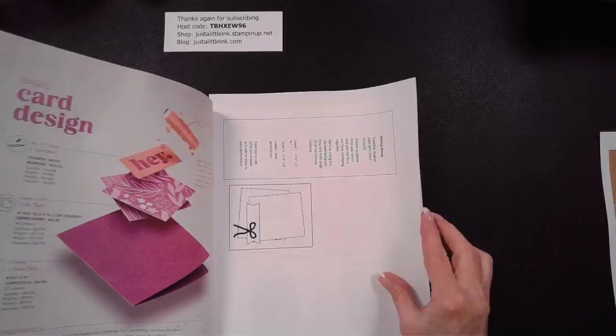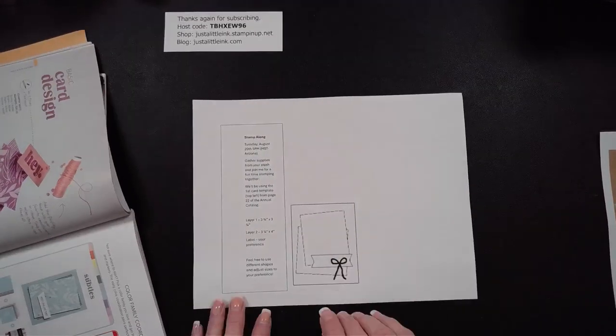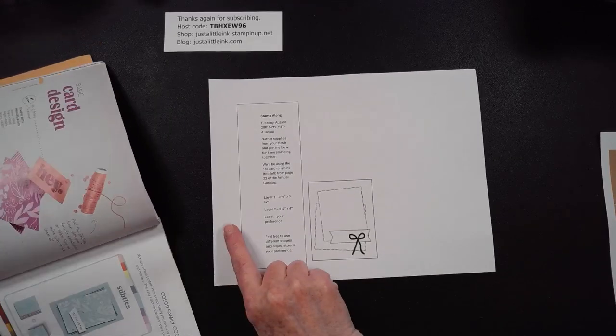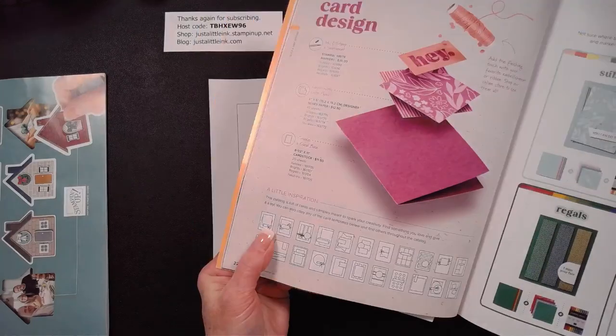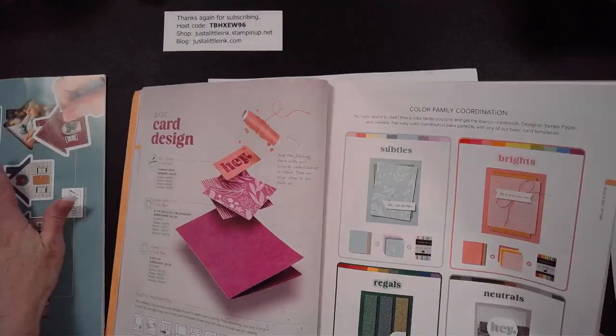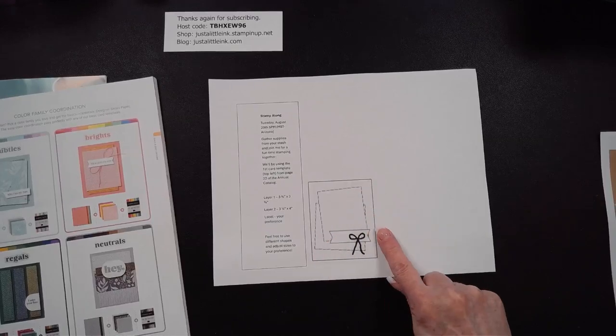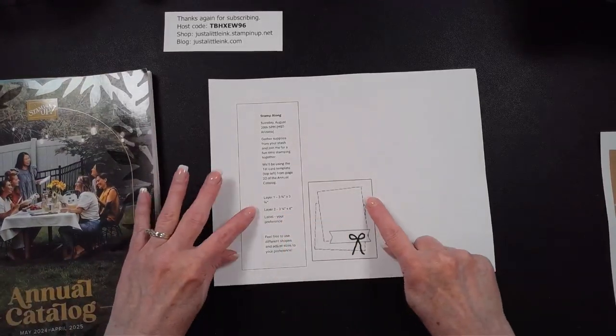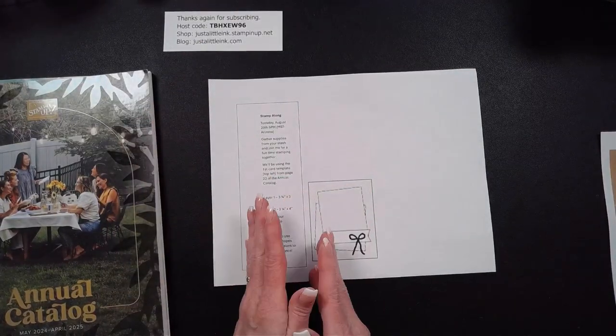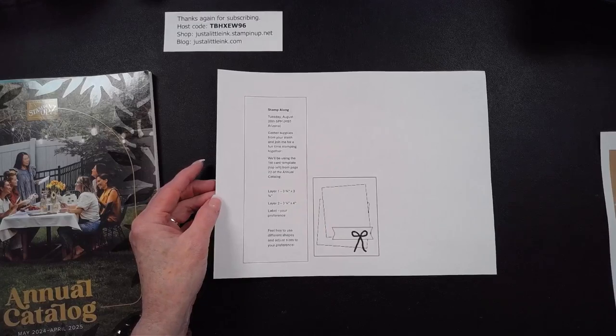I'm also doing something new. I've been doing some mystery stamping on the third Tuesday of the month. I'm shifting it up just a little bit and I'm going to do what I'm calling a stamp along. We're going to start stamping along with the card layouts that are in our catalog. The first one on the upper left, that is what this layout is. I've got all this stuff listed, it's all on my blog under my calendar, and it's the best way to RSVP. I do that on Zoom.